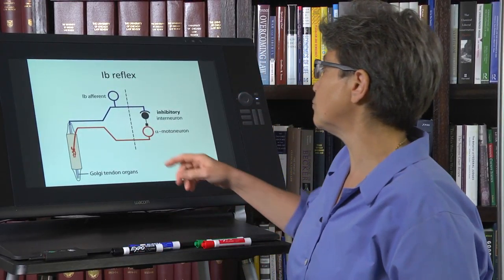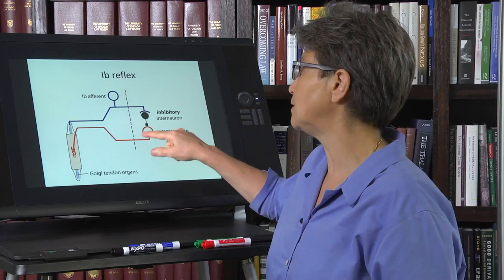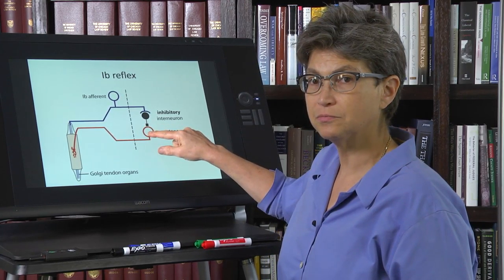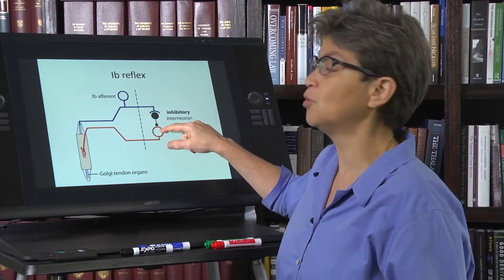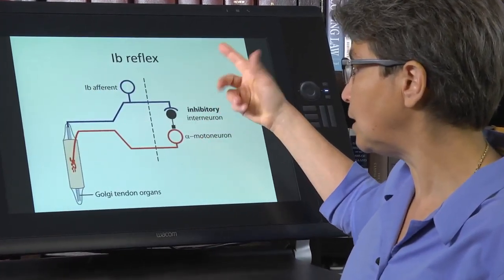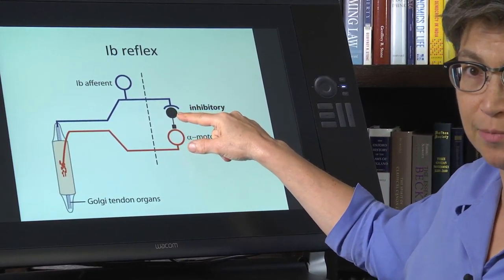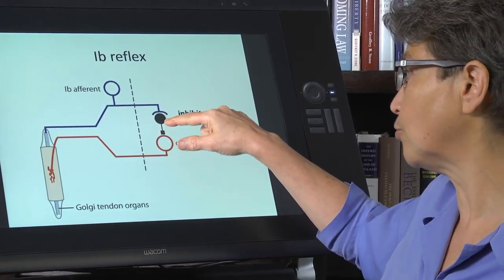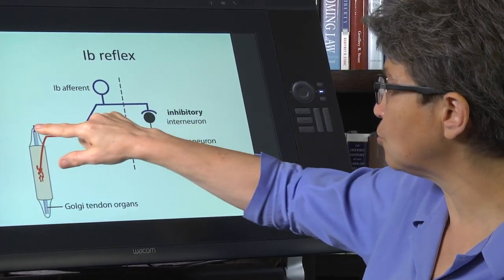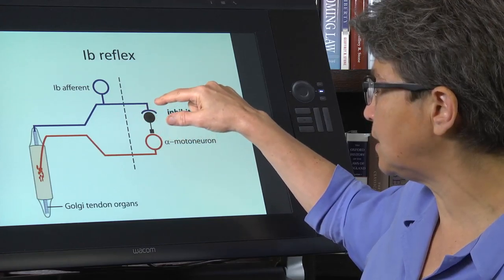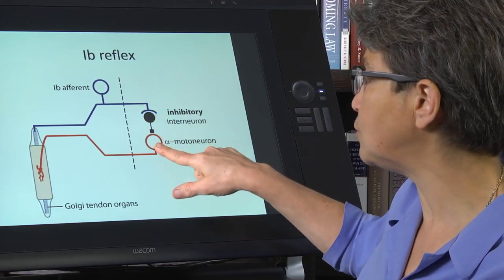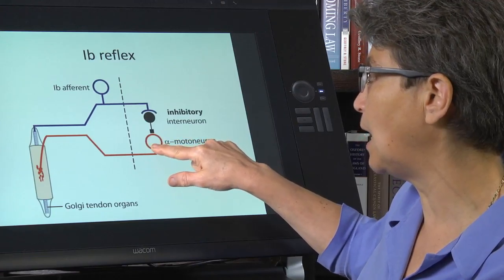The result of 1b afferent activation is to inhibit the same muscle — you're inhibiting the motor neuron that goes to the homonymous muscle. The signal goes through an inhibitory interneuron, which is probably the same as the 1a inhibitory interneuron. So the 1b afferent synapses on that inhibitory interneuron, which then synapses on the alpha motor neuron going to the same muscle.